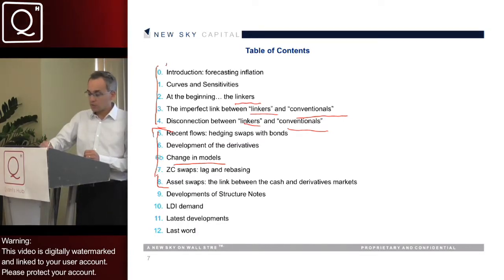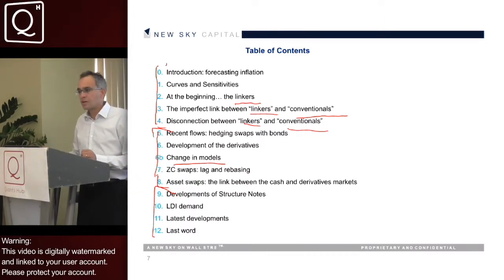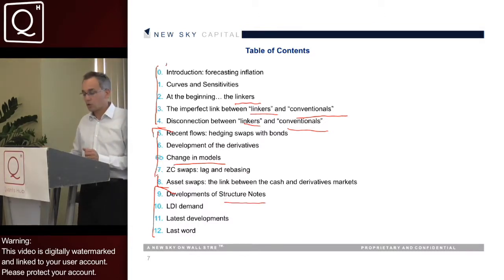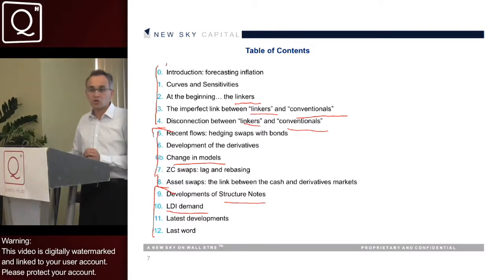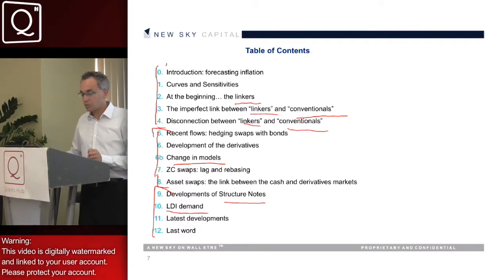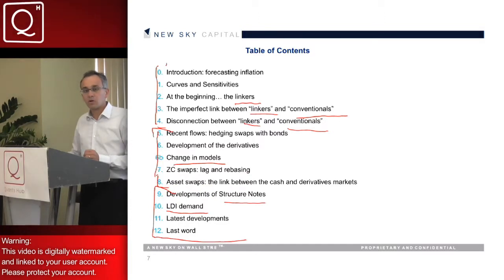Then in the last part, we're going to focus on more complex products which have been developing on the back of retail investors, called structured notes — particularly what we call the year-on-year structures. We're going to see also more complex products which have been developing on the back of LDI demands and the latest developments, which is mainly the option market via the zero coupon inflation options and year-on-year inflation options.